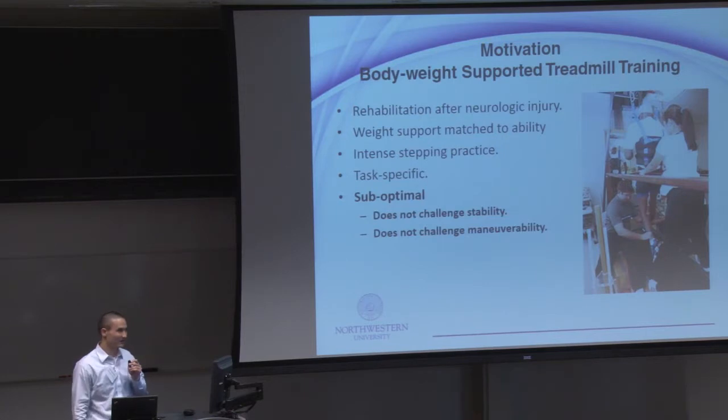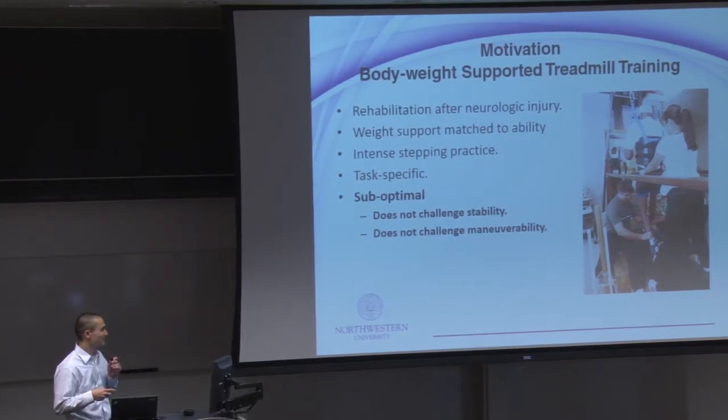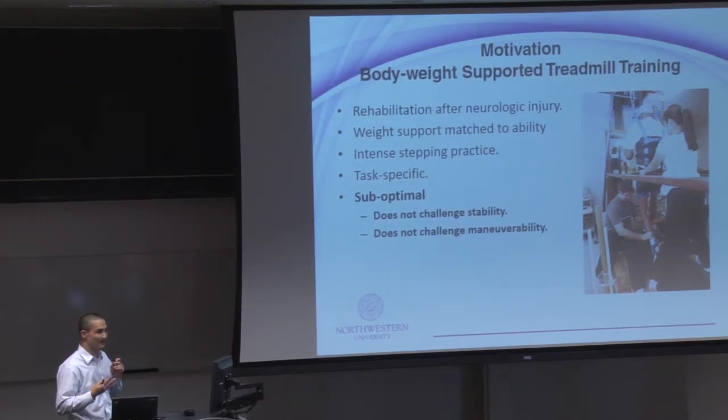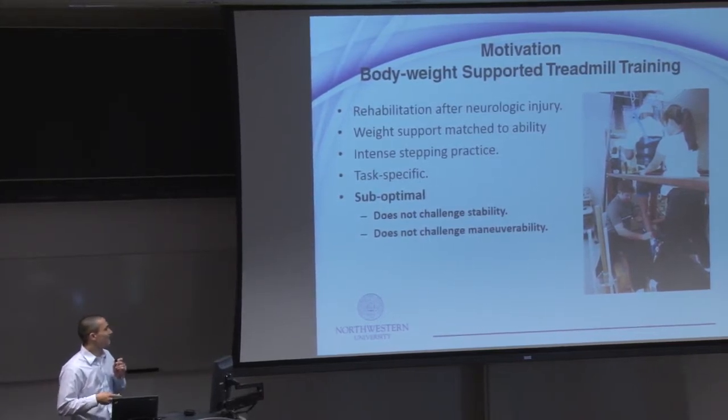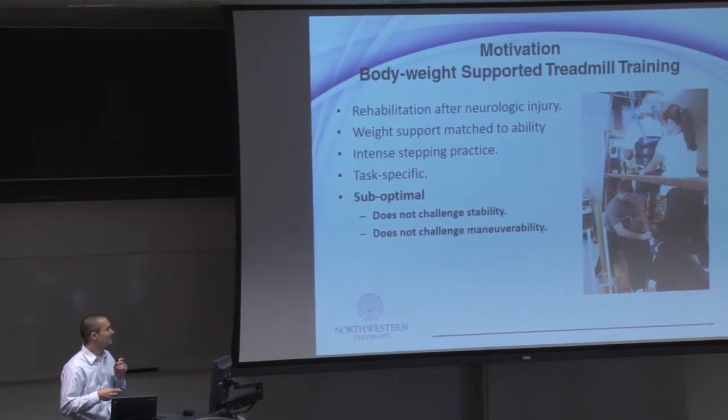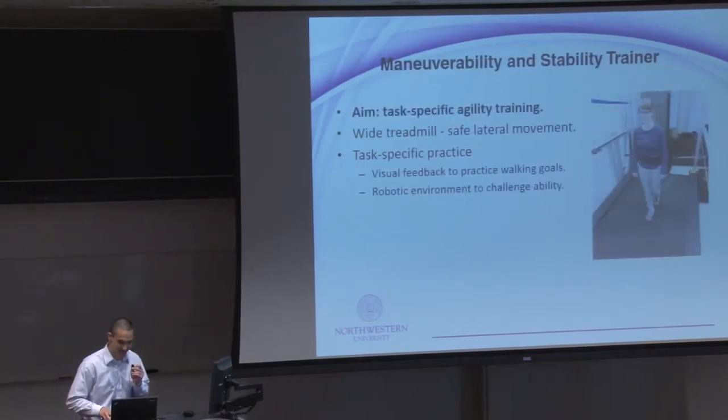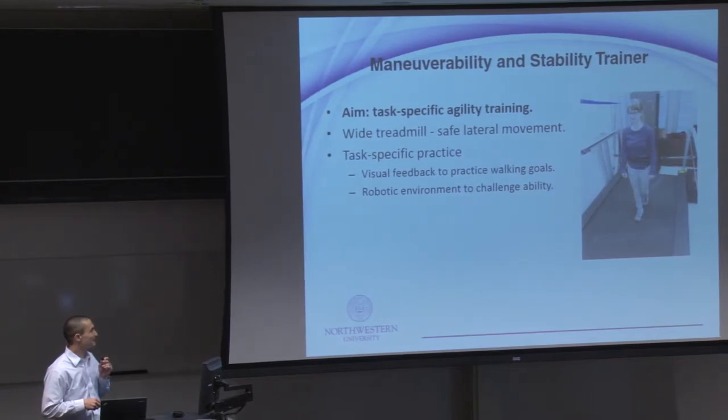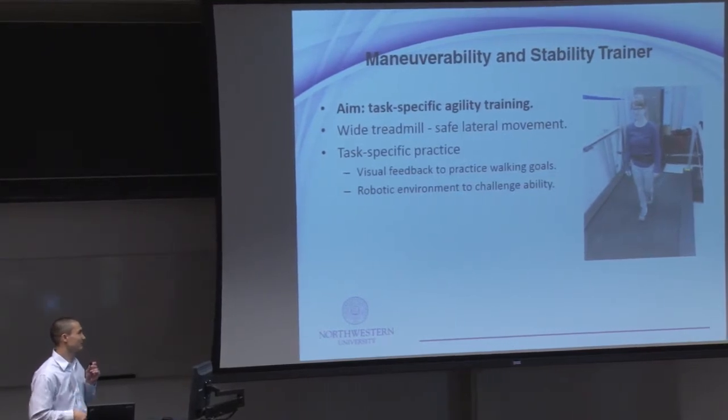A common method of rehabilitation after neurological injury is bodyweight supported treadmill training. This method of rehabilitation supports a percentage of the person's weight, allowing them to practice taking steps whereas before they could not. This method of training is very good because it allows intense stepping practice. And it is also based on this idea of task specificity which basically states that this training task simulates many of the aspects of walking. However, this training is still likely sub-optimal because it does not challenge stability and maneuverability. Therefore, our aim is to, using this idea of task specificity, develop a device that can appropriately challenge the stability and maneuverability of each patient.